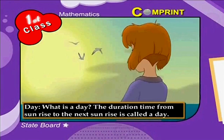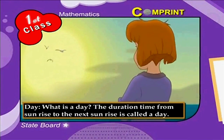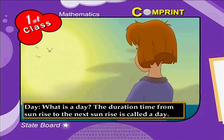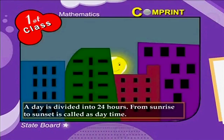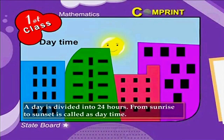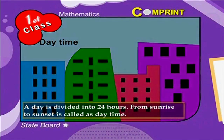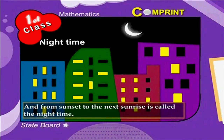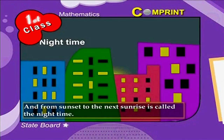What is a day? The duration of time from sunrise to the next sunrise is called a day. A day is divided into 24 hours. From sunrise to sunset is called daytime, and from sunset to the next sunrise is called nighttime.